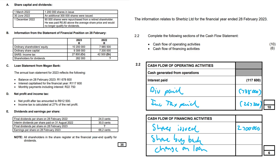Now we need funds used to repurchase shares. This was partially completed in the previous question, so I'm bringing those values down. From question 2.1, in the retained income note, we calculated 90,000 shares times 80 cents, giving 72,000 — the difference that goes into retained income. The average share price of R6.60 was previously calculated in the ordinary share capital note, giving us 594,000.